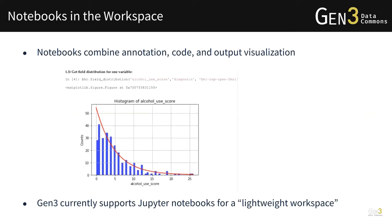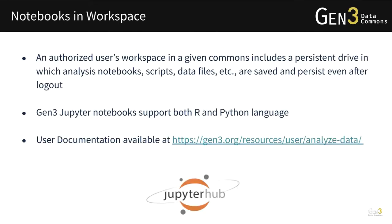Notebooks combine annotation, code, and output visualization. In this example, the first line annotates the purpose of the function — to get field distribution for one variable. On the second line, the function is called with several parameters, and the histogram is plotted in the notebook. The count distribution for alcohol use score follows a Poisson distribution. Gen3 currently supports Jupyter notebooks for a lightweight workspace.